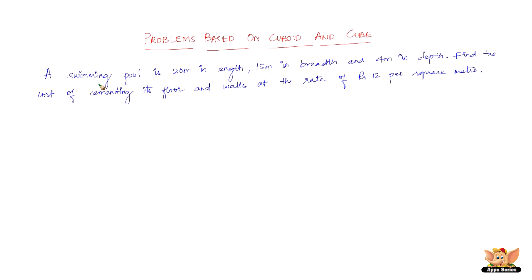It is clear from the question that the swimming pool is a cuboid — 20 meters in length, 15 meters in breadth and 4 meters in depth. Swimming pools have their tops open, so there are only 5 faces to consider, not 6. One is the base (the floor) and the other four are the walls.